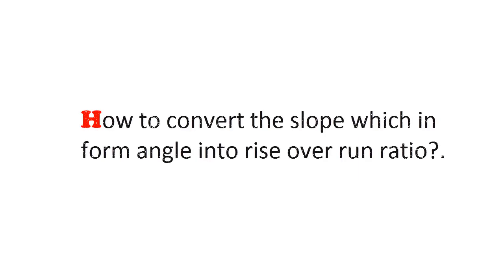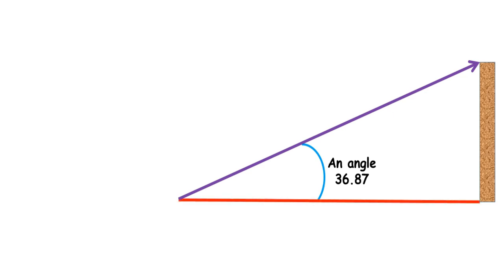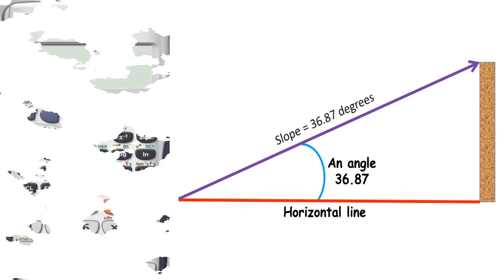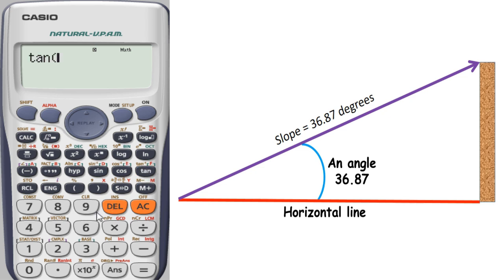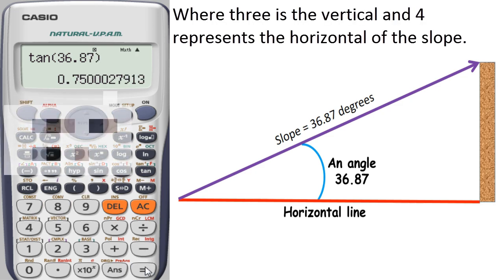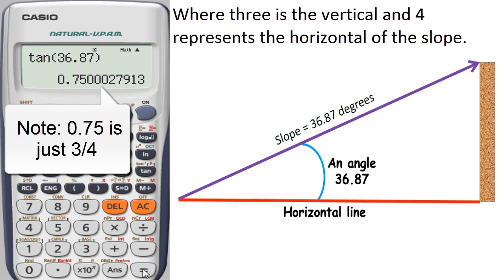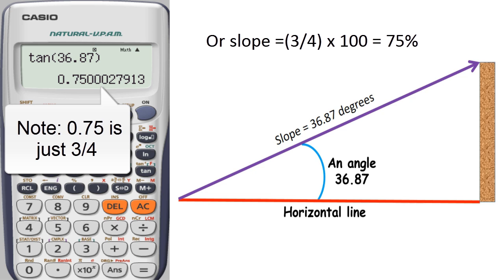How do you convert a slope that's in the form of an angle into rise over run ratio? Let's convert the slope. Say the slope is 36.87 degrees. To convert 36.87 degrees into rise over run ratio, just take the tangent of 36.87 degrees using your calculator. You will get an answer of 3:4, where 3 is the vertical and 4 represents the horizontal. Multiply 3 over 4 by 100 to get the slope in percentage, which is 75 percent.